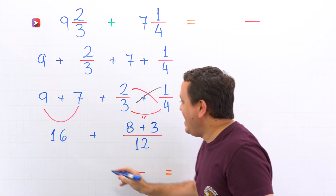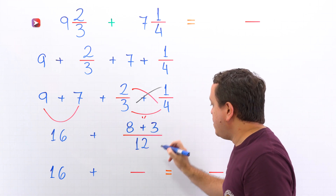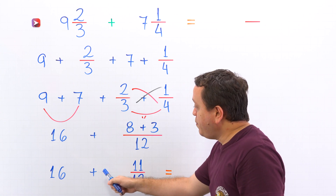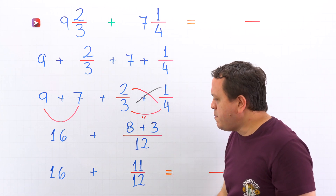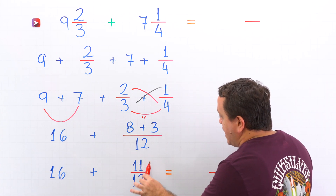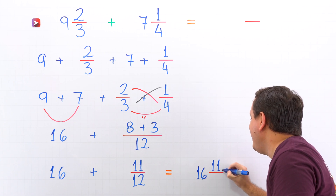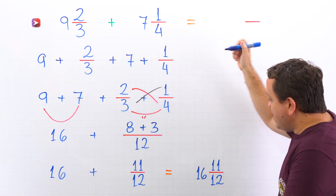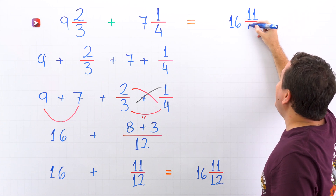Next, 16 plus the plus sign — 8 plus 3 gives us 11. And then the denominator stays the same. Here we have the sum of a whole number and a proper fraction — that is the definition of a mixed number. So finally, we rewrite the sum of 16 and 11 twelfths as the mixed number 16 and 11 twelfths. In that way, 9 and 2 thirds plus 7 and 1 fourth gives us 16 and 11 twelfths.